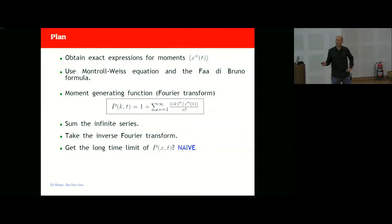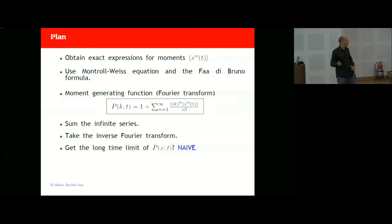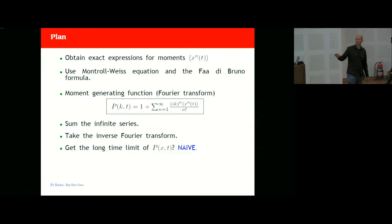I expected that reinserting the exact asymptotic moments and inverse-transforming would recover the density of particles at large time — but this turns out to be naive and not true. Let us do it for a two-state model where velocity is either +1 or -1. I calculate the moments using a nice formula, sum the Fourier series to get a function in k-space, then do the inverse Fourier transform.